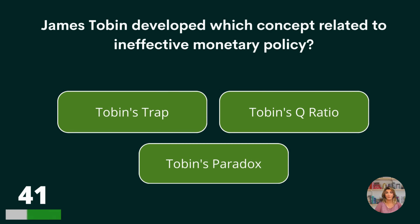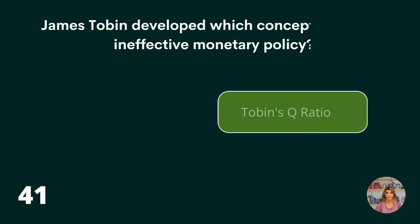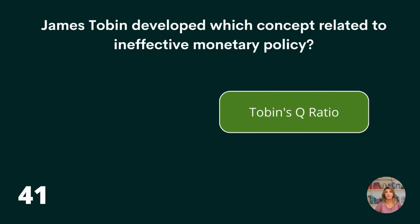Let's go on to economic theories. James Tobin developed which concept related to ineffective monetary policy? Tobin's trap, Tobin's Q ratio, or Tobin's paradox?